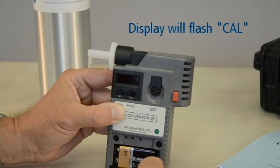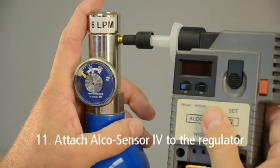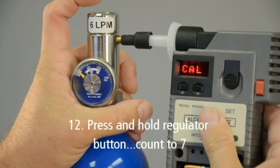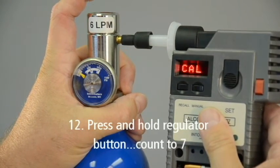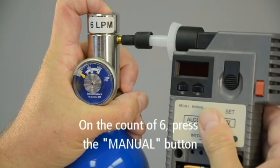The display will flash CAL. Now attach the AlkaSensor 4 and mouthpiece to the regulator. Next, press and hold the regulator button and count to 7. When you reach the count of 6, press the manual button.